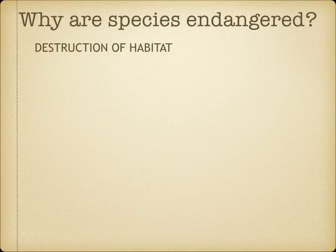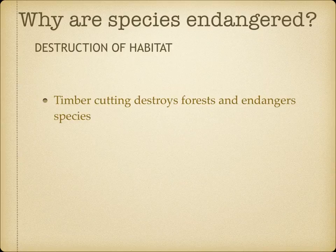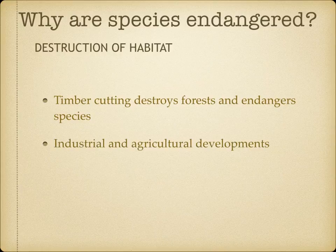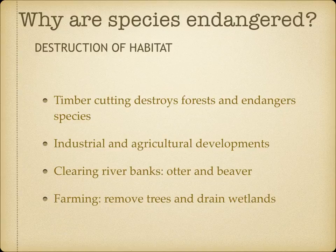Starting off with the destruction of a habitat. Can you think of some reasons why a habitat might be destroyed? Timber cutting destroys forests and endangers species — for example, the orangutan. Industrial and agricultural developments threaten many plant species of the Amazon forest. Clearing riverbanks destroys the natural habitat of otters and beavers. Modern farming methods remove trees and drain wetlands, endangering the species that live there.